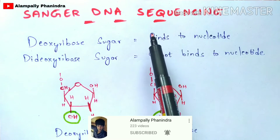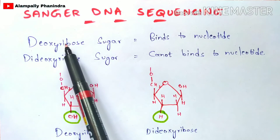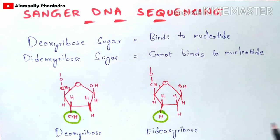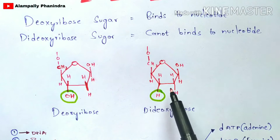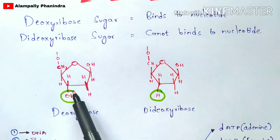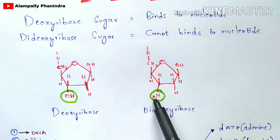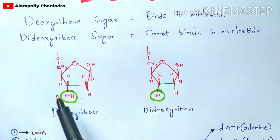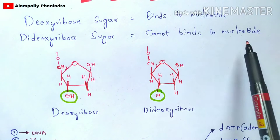Before entering into Sanger DNA sequencing, there is one important point. You have to know about deoxyribose sugar as well as dideoxyribose sugar. Deoxyribose sugar can bind to the nucleotide, but dideoxyribose sugar cannot bind to the nucleotide. At the third carbon of deoxyribose sugar, there is a hydroxyl (OH) group, but in dideoxyribose sugar, only a hydrogen group is present — that is the main difference.